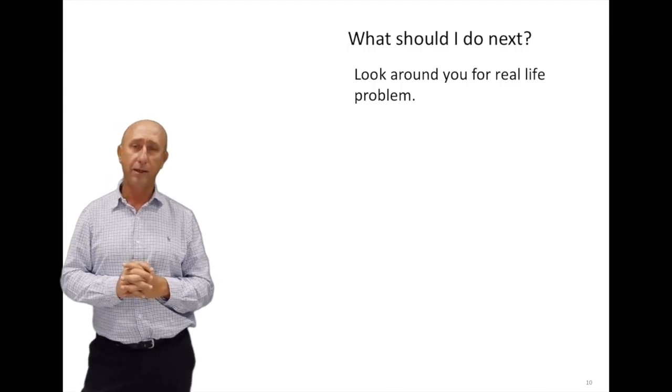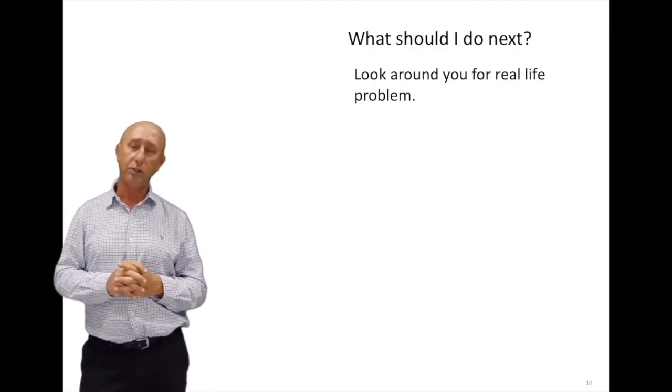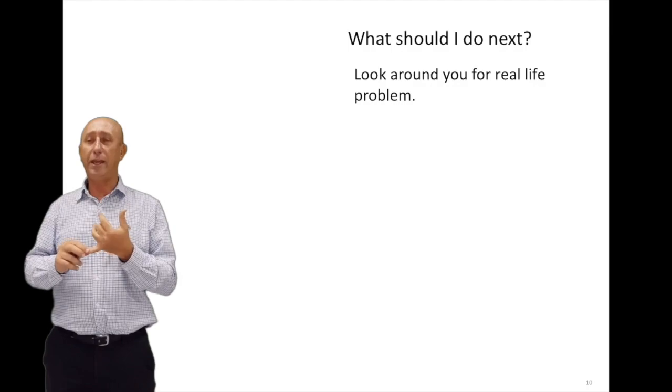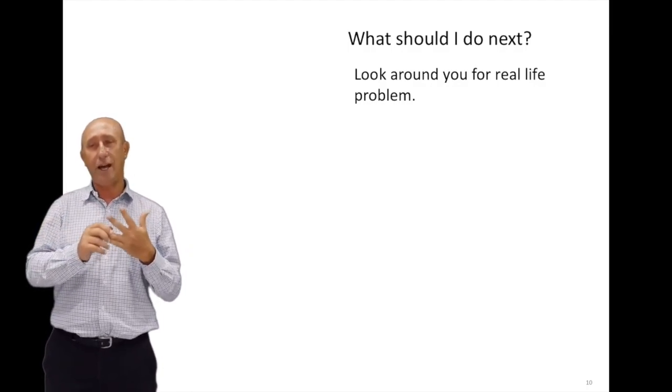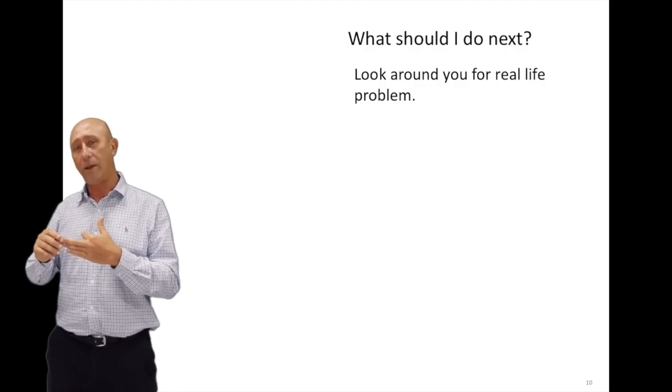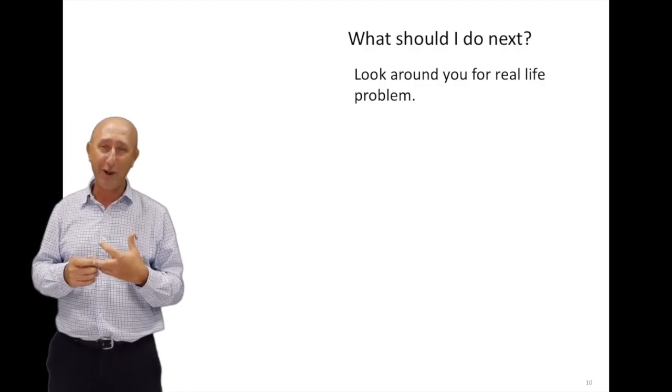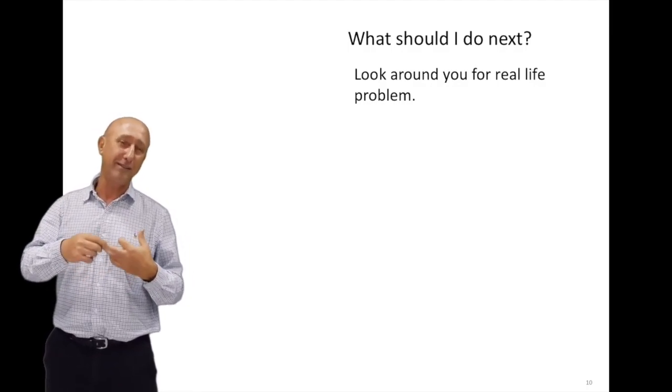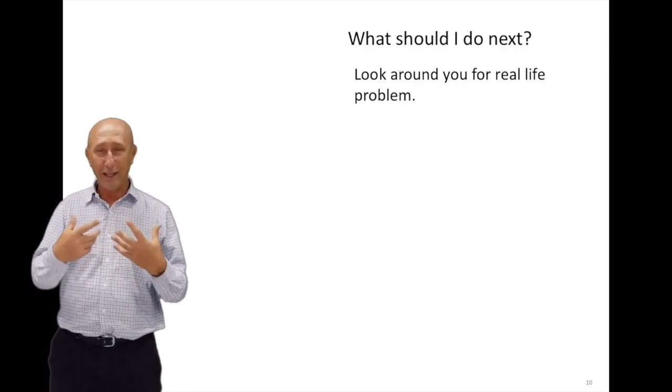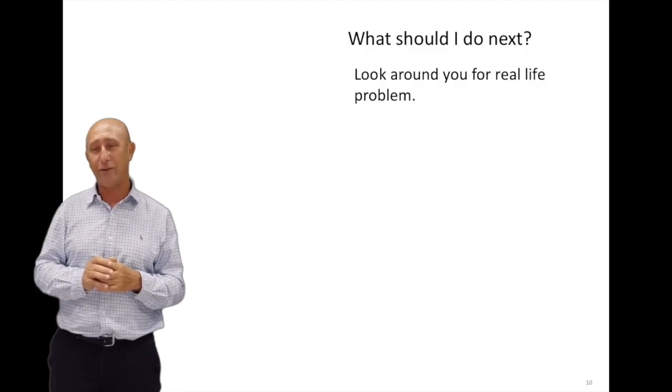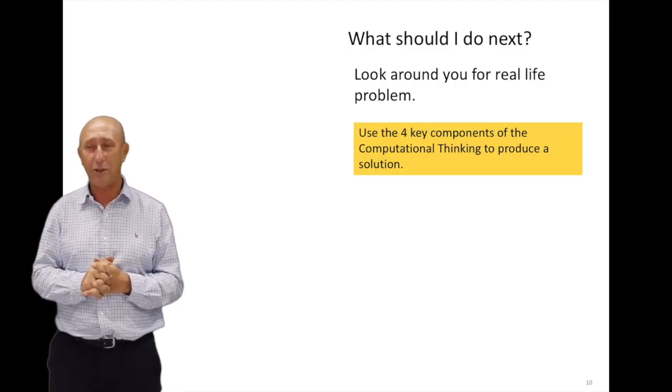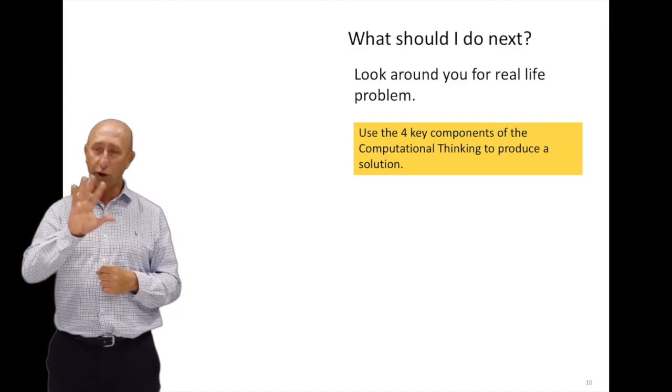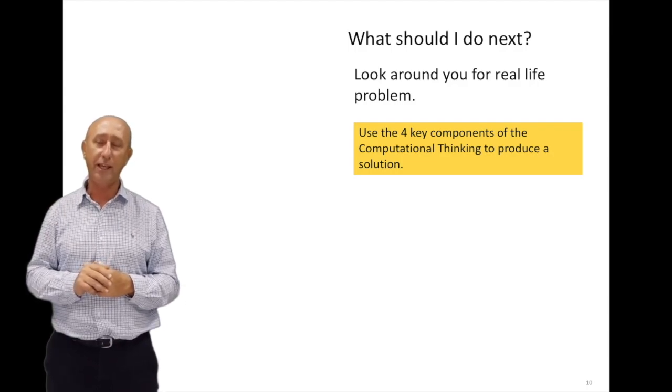What should you do next? What we want you to do in this video is that I want you to come up with an example, a real-life example. It could be making a pie, changing the tire, or planning a wedding. Planning a wedding is a lot more complex and has a lot more abstractions and pattern recognitions and all of that stuff. But it's just a way to think about different problems around you. What do you do? You need to come up with a problem and then find those four key components of computational thinking in it, in your solution.